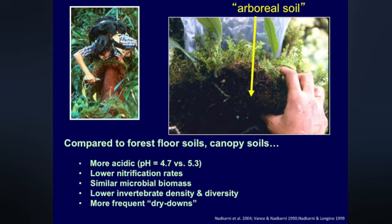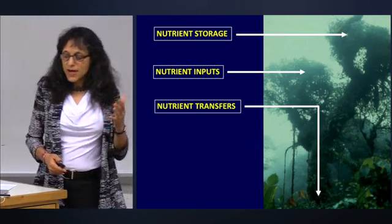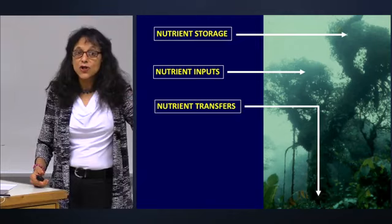With that background on epiphyte composition and biomass, I'd like to move to ecosystem function. Trained as an ecosystem ecologist, I think of forests as systems. I'm more interested in the 'why' questions — what are these canopy communities actually doing or functioning as in these tropical forests? My major work began with nutrient cycling: what is the nutrient storage of canopy plants, what are the inputs from rainfall, mist, and dry deposition, and how are those nutrients transferred to other parts of the forest ecosystem?